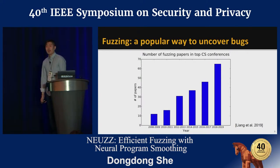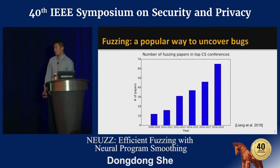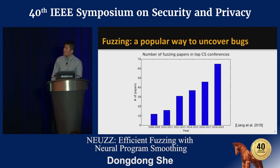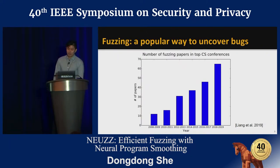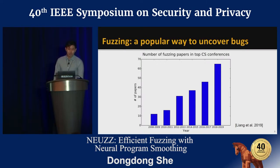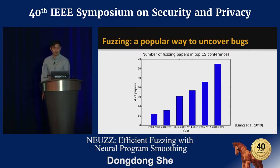Fuzzing is becoming a popular way to find software vulnerabilities. In the last 10 years, the number of fuzzing papers has been growing a lot. Many researchers are trying to make fuzzers more efficient. However, almost all of them are variants of the same design: evolutionary fuzzing.